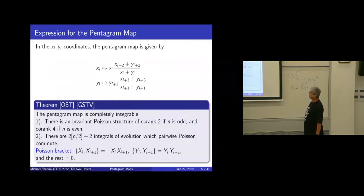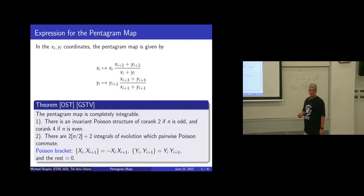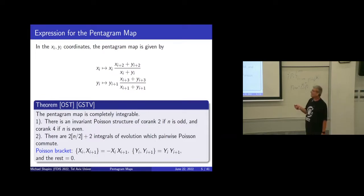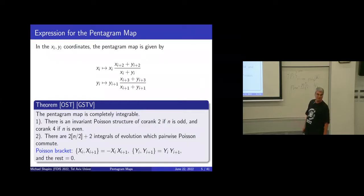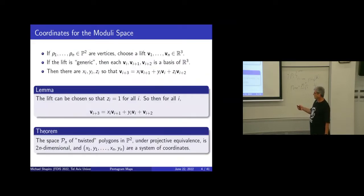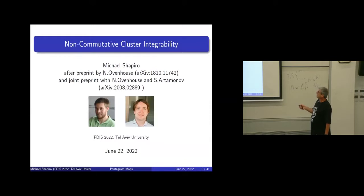The space P_n of twisted n-gons modulo projective equivalence is 2n-dimensional. Each point in the plane has two coordinates, plus the monodromy gives eight extra coordinates, minus eight for the PSL(3) equivalence, giving total dimension 2n. By a classical result of Schwartz, or Schwartz–Tabachnikov, the pentagram map can be expressed as a rational transformation in these coordinates.